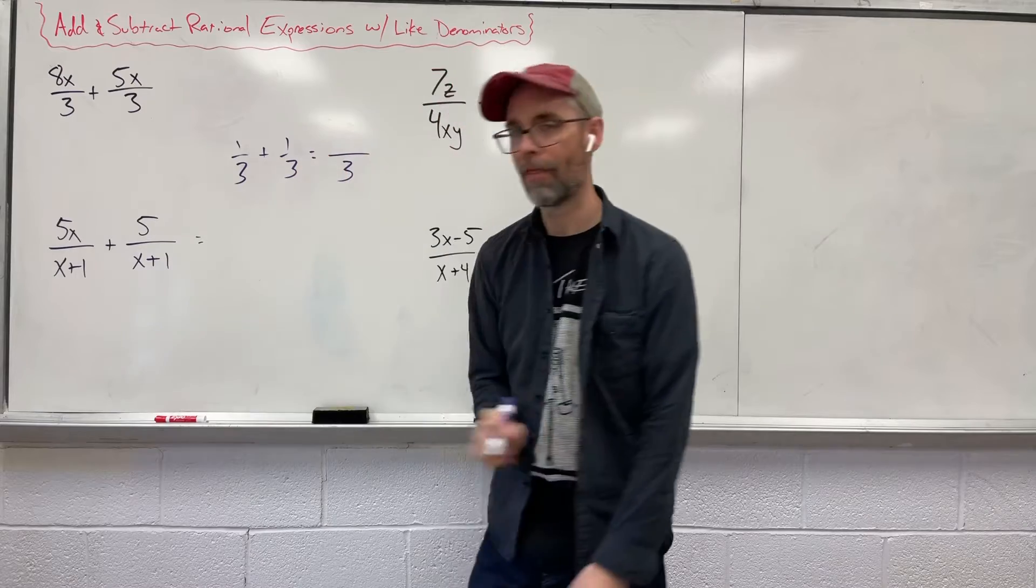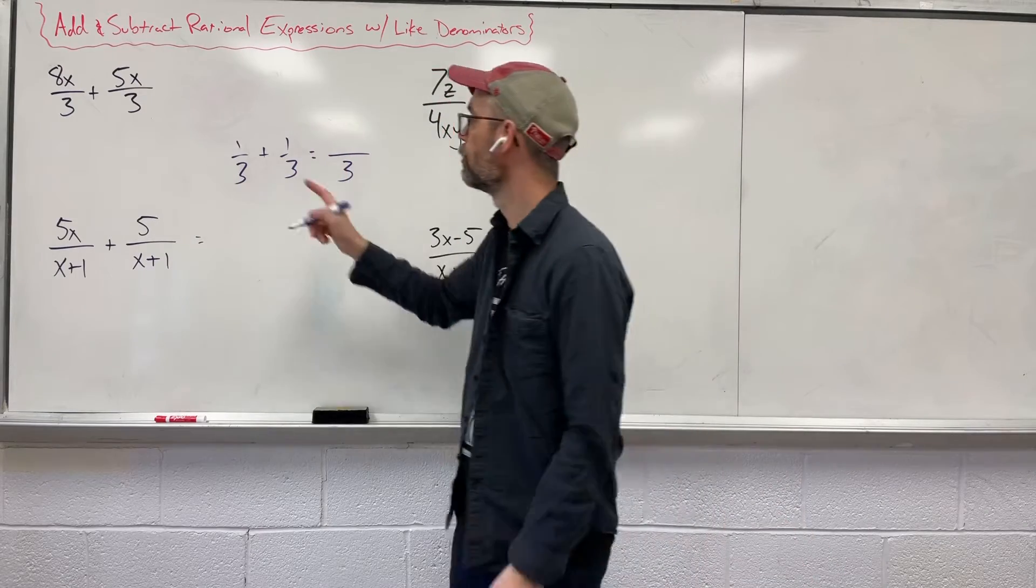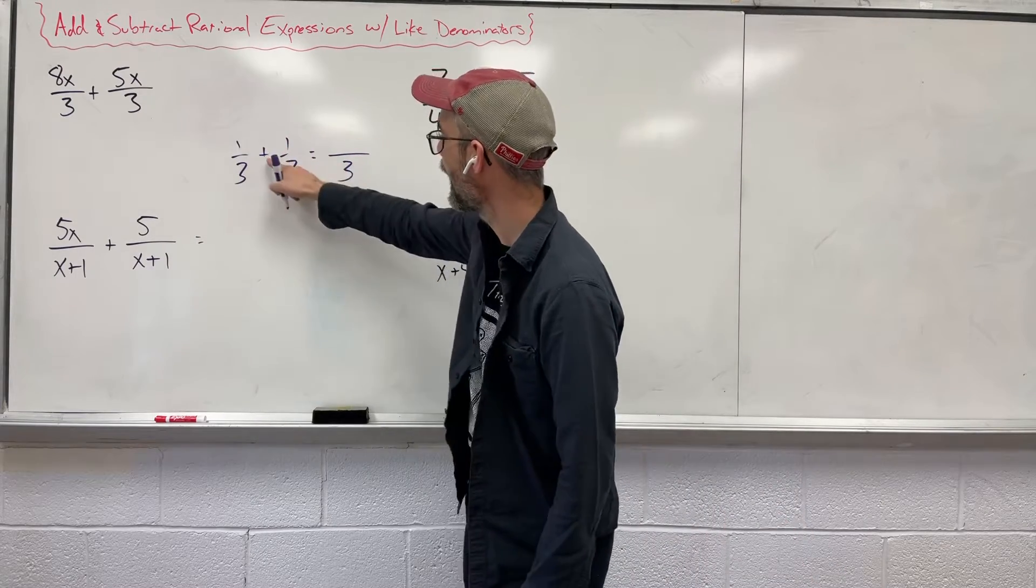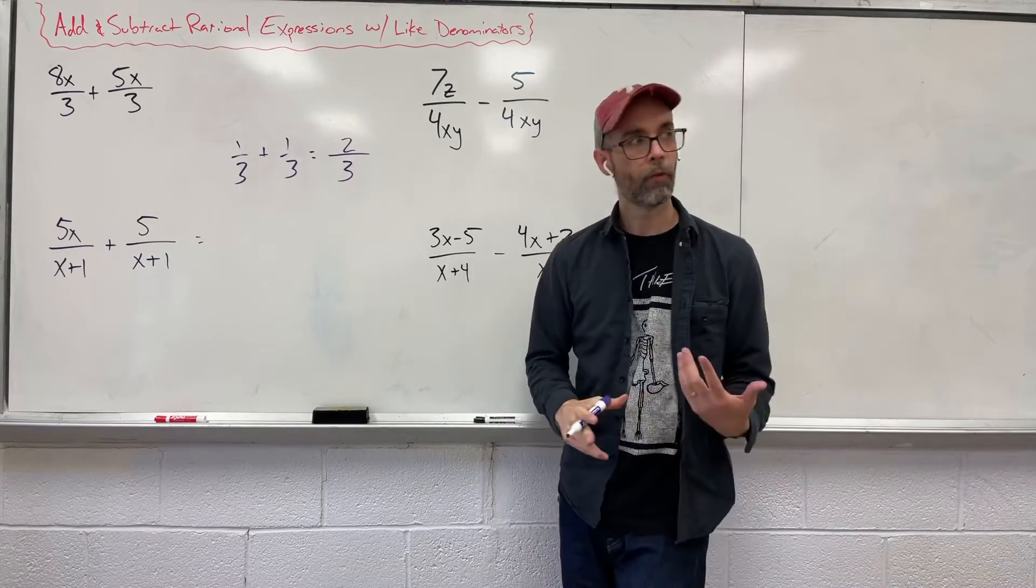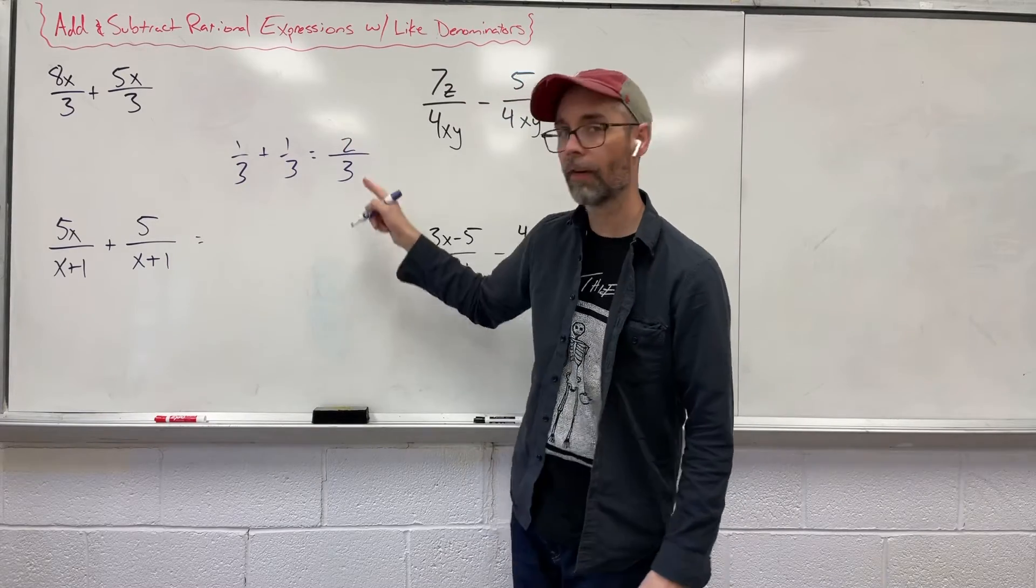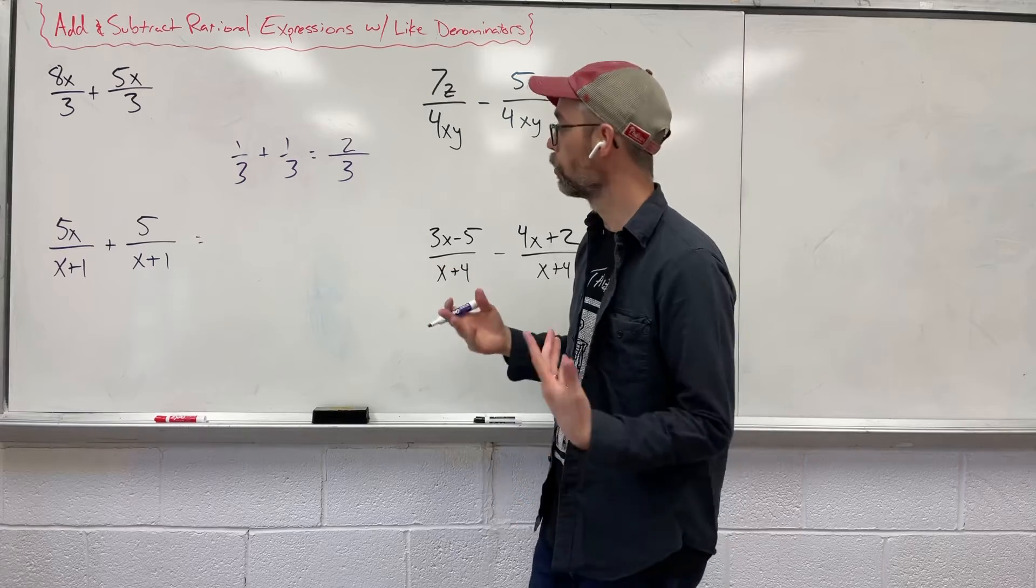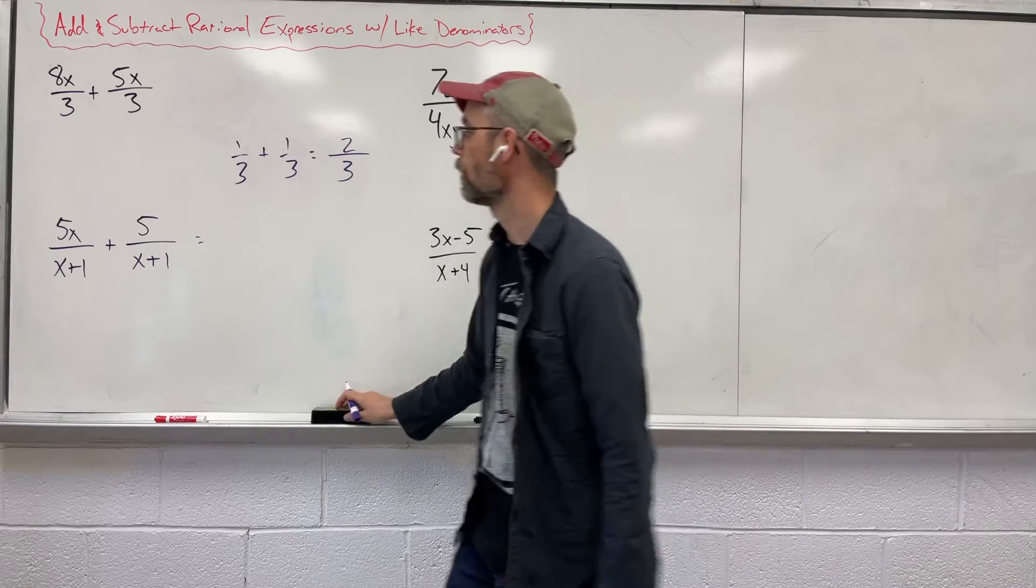So what happens is I keep that and the number up top, the numerator, the one and the one, we then add them together to give us that two. And if for whatever reason we could simplify this, we of course would, where we might have to do that somewhere with one of these other problems.